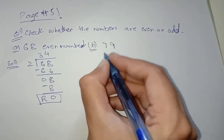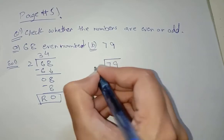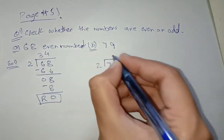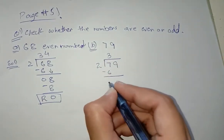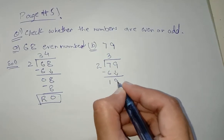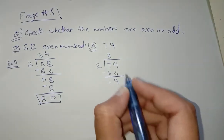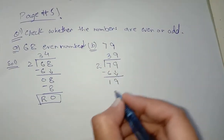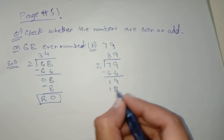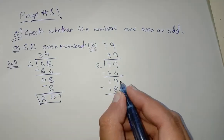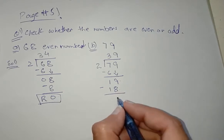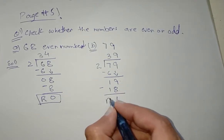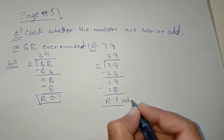Part b is 79. We divide 79 by 2. Two threes are six — subtract, the answer is 1. Bring down 19. Two nines are eighteen — subtract 18 from 19, the answer is 1. The remainder is 1, so 79 is an odd number.